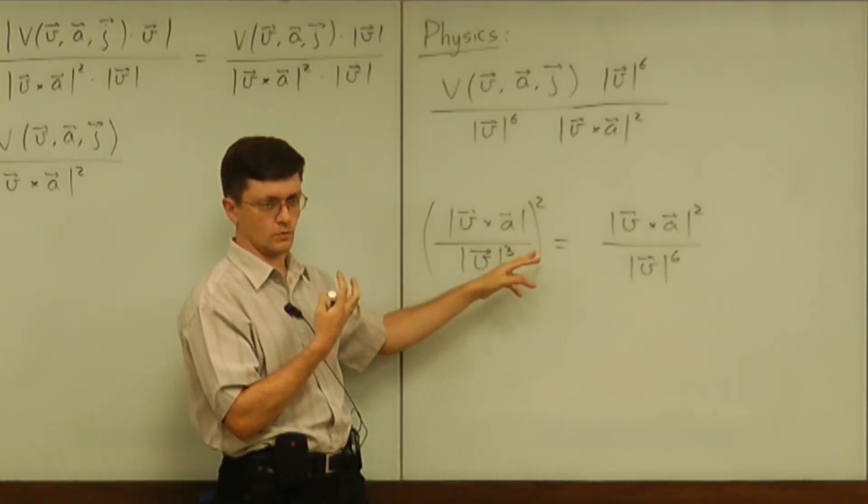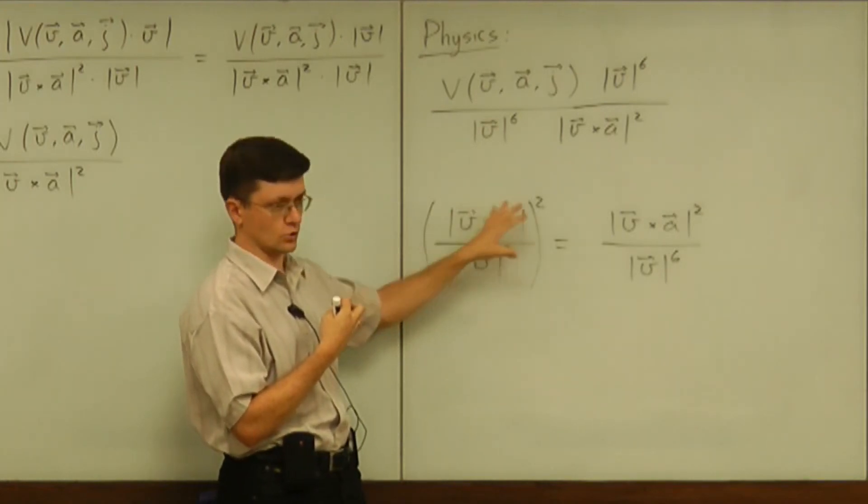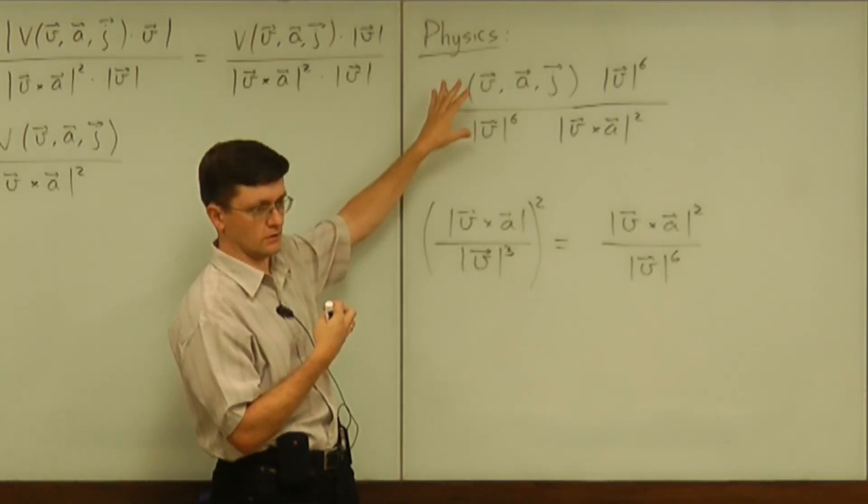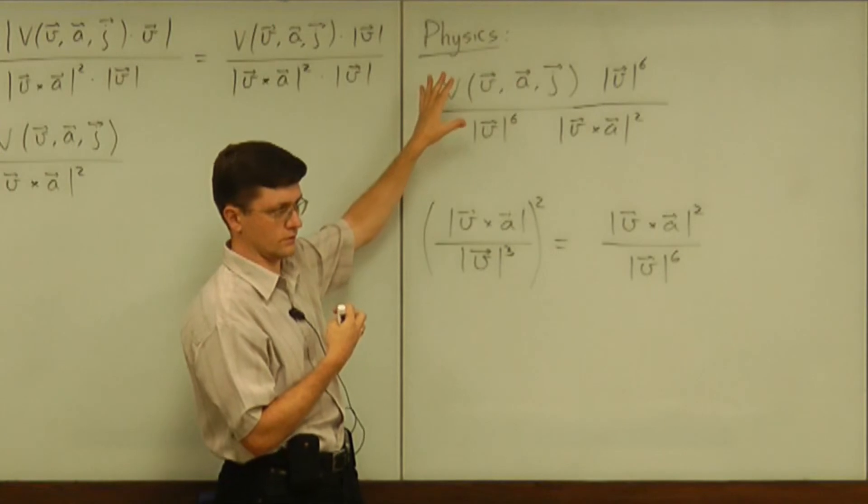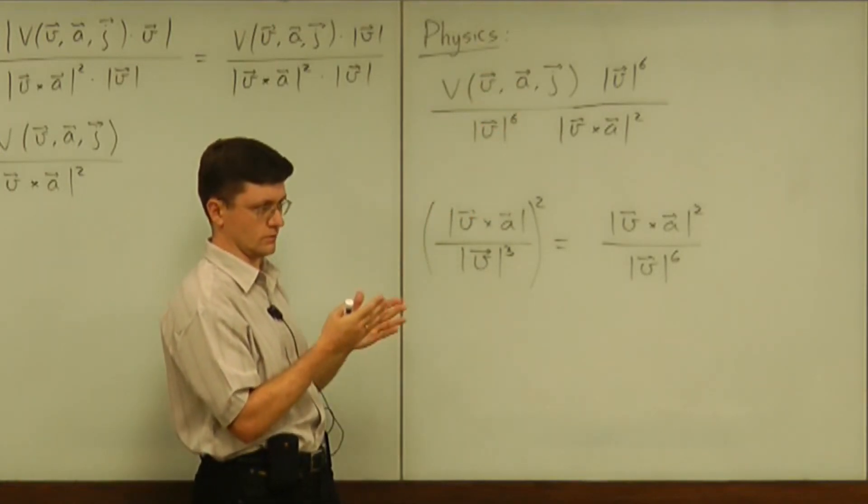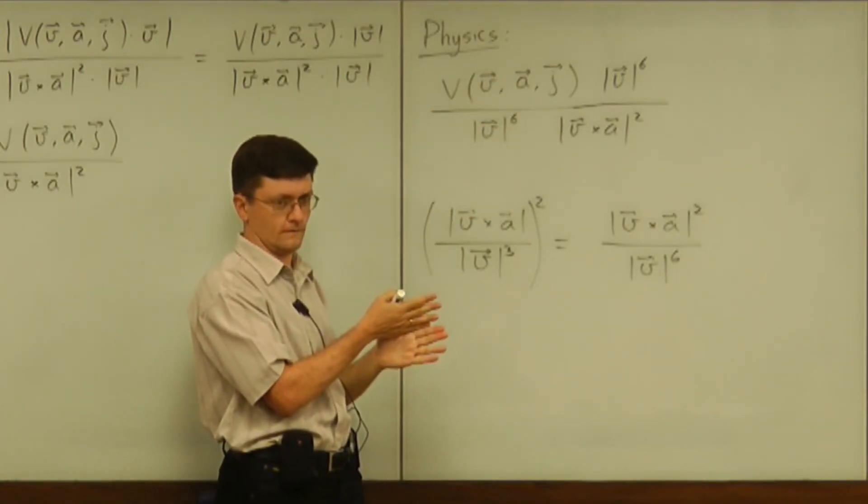What we needed is we needed to extract that curvature information from there, so that the remaining part is responsible for the torsion only, right?